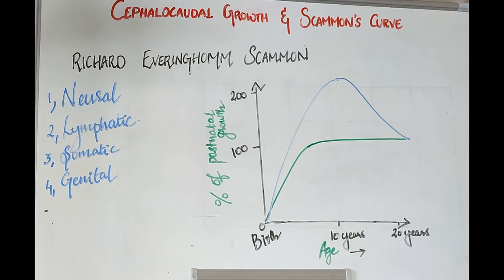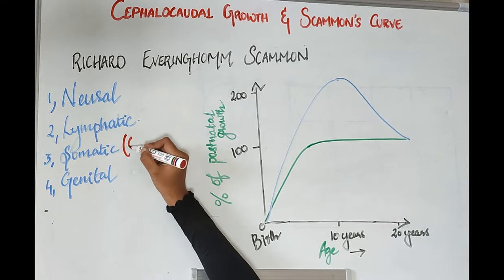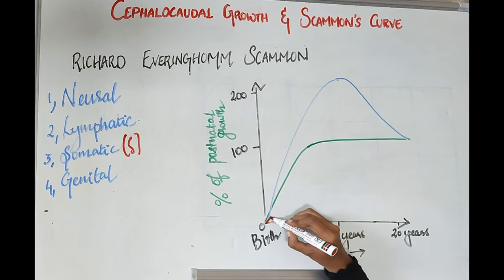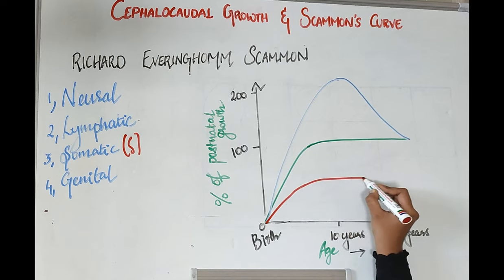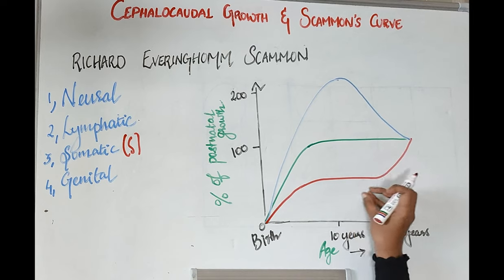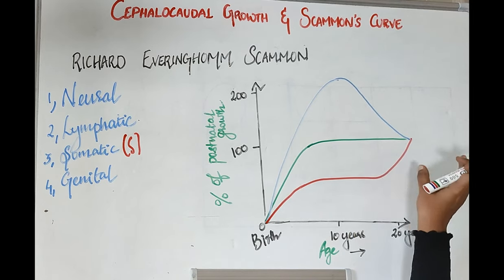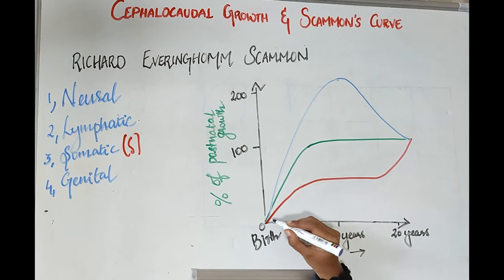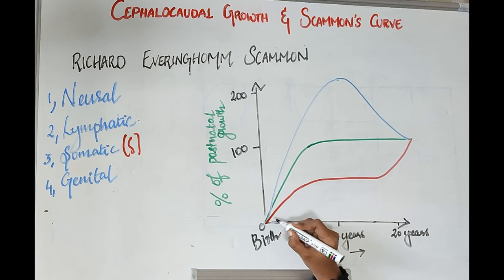Coming to somatic tissues or general tissues: somatic tissues follow a sigmoid-shaped or S-shaped curve. Initially there will be slowing of growth during childhood, and then there will be acceleration during puberty. Finally, coming to genital tissues: genital tissues have negligible growth until puberty, because puberty is the stage where secondary sexual characteristics start to develop. They show negligible growth until puberty, and after puberty they will reach their peak.